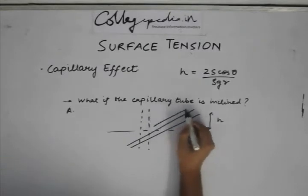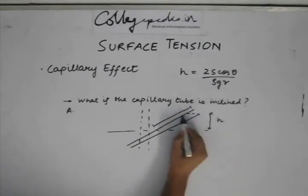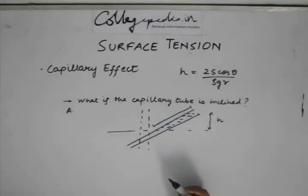Although, this length which is along the capillary tube, the length up to which the liquid is filling it up, this length will not be the same. This is what happens when the capillary tube is inclined.